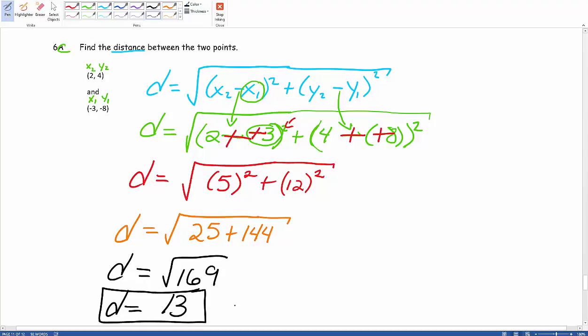So again, 13 would be our final solution for the distance for this problem. Again, that is chapter 1, target 6C.